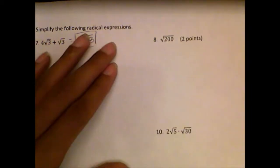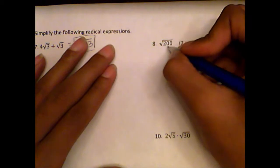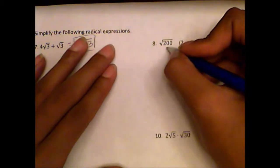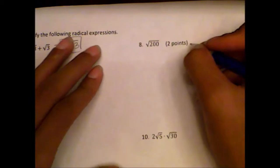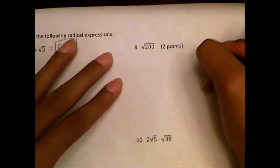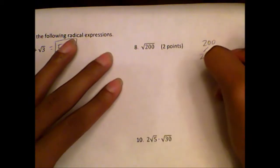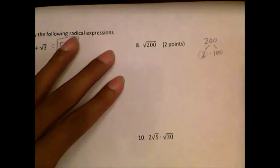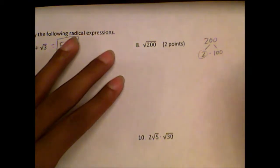Number eight: we have the square root of 200, or rad 200. To simplify it, we're going to do our factor tree. We want to keep growing our factor tree out until all of the leaves are prime numbers. When we get a prime number, we circle it so we can remember it — we're going to use it in the end.